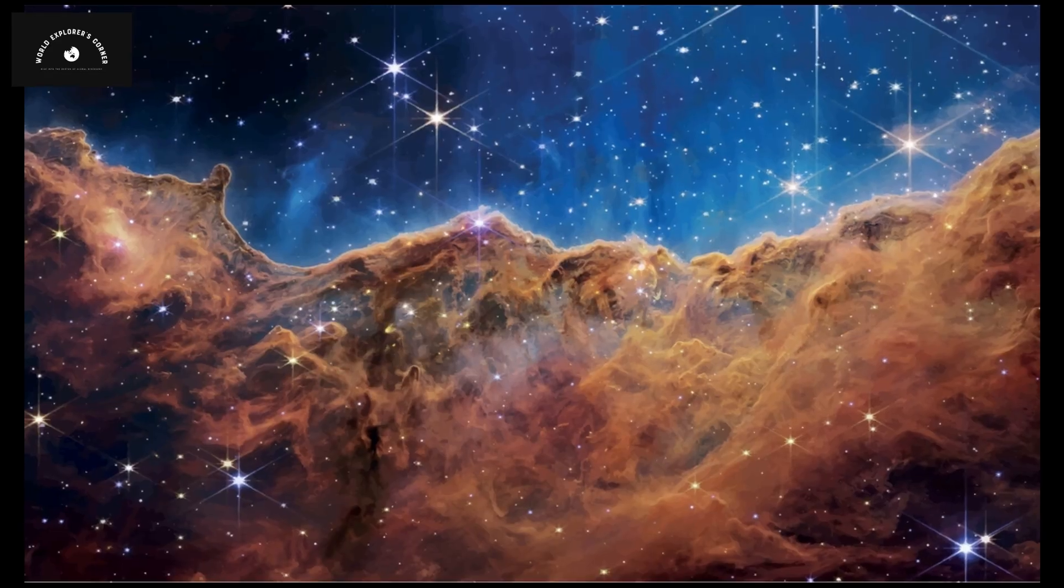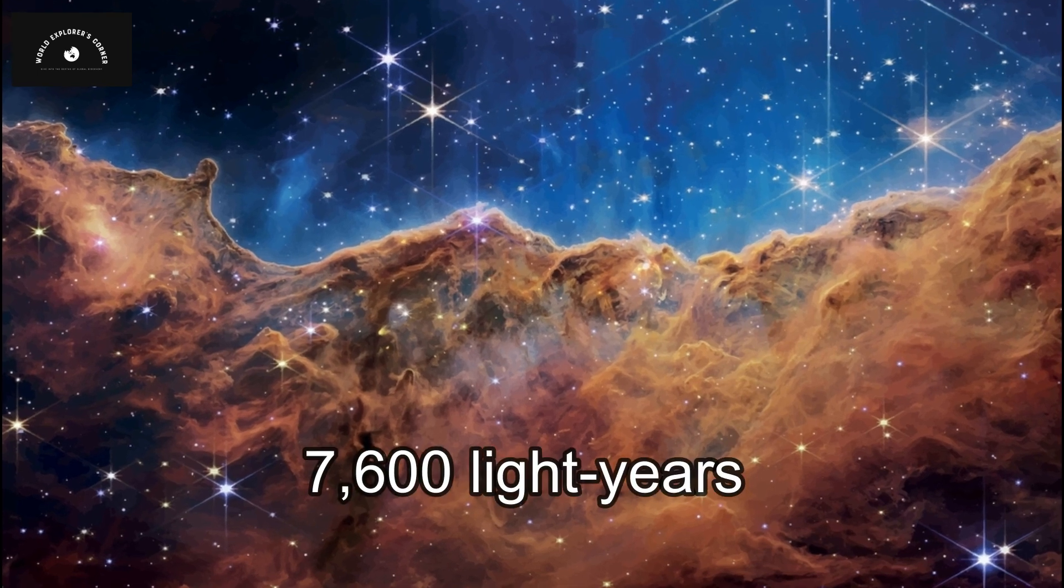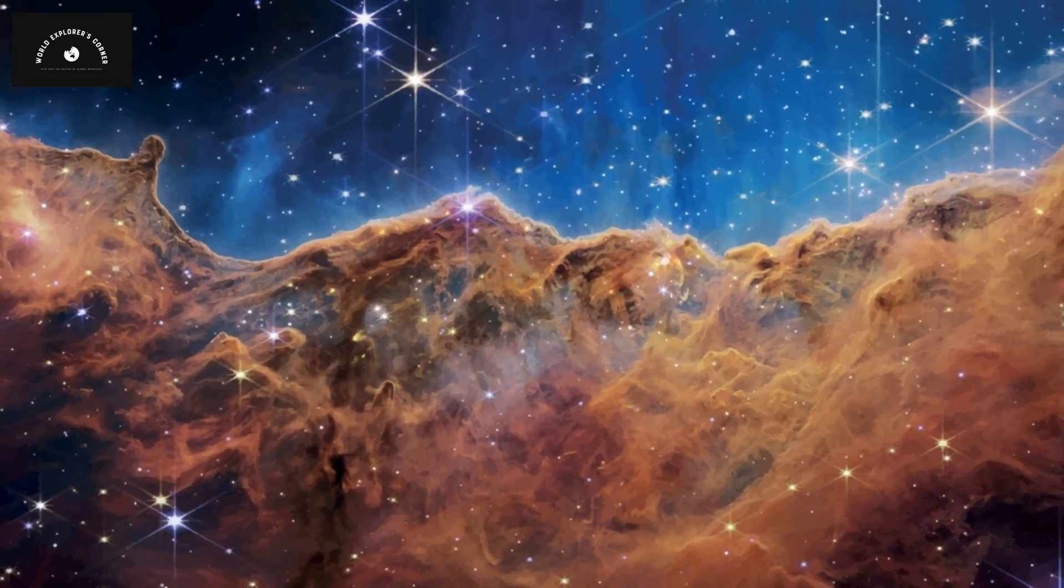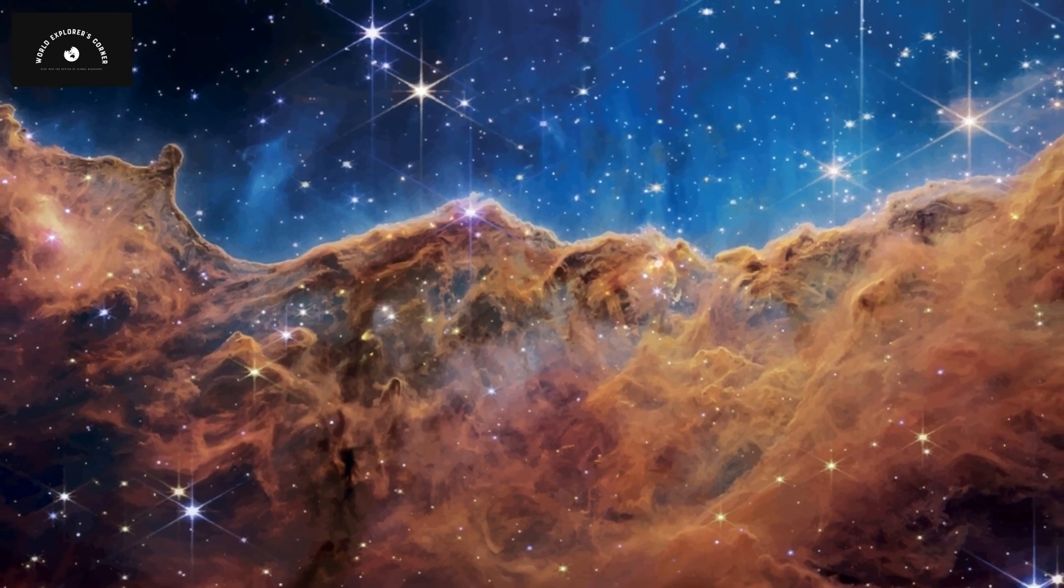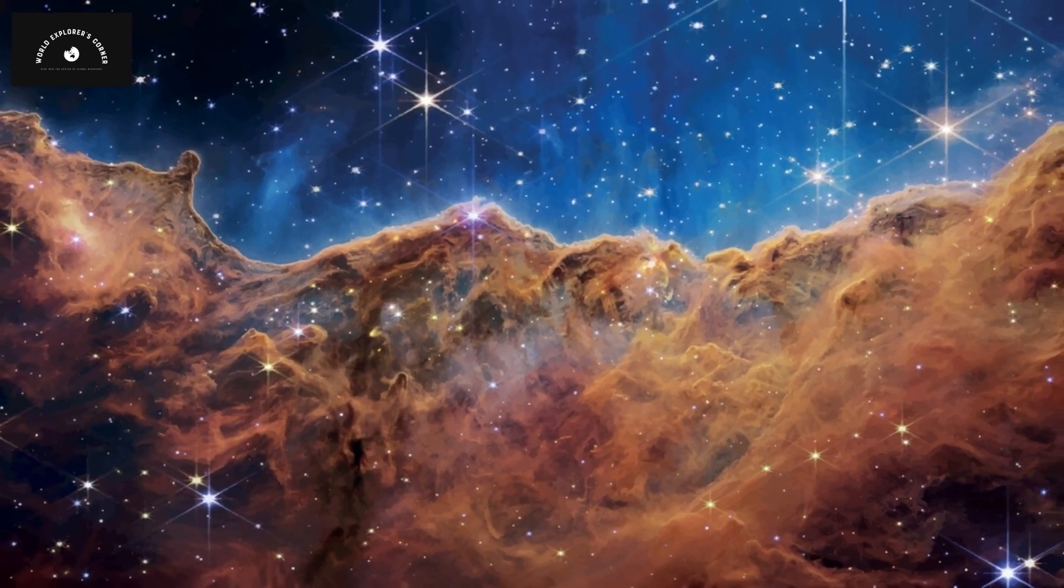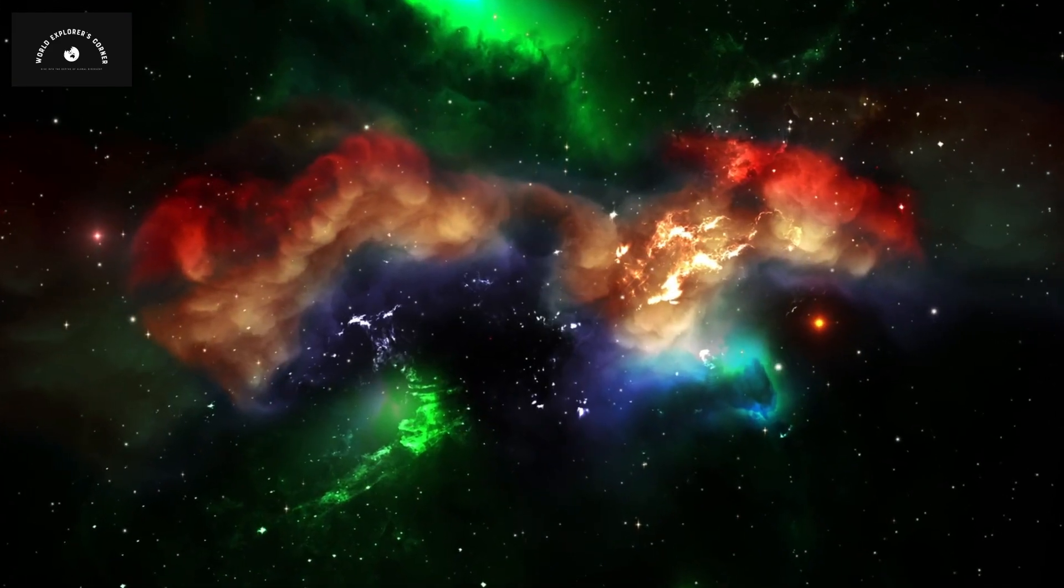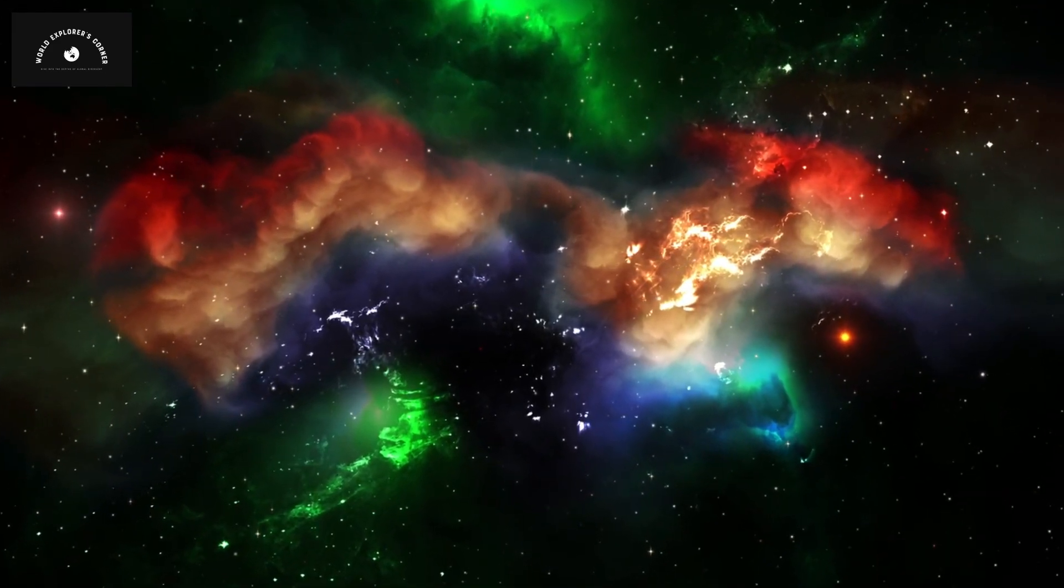The second photo shows a nursery located 7,600 light years away from Earth. In this nursery, known as the Carina Nebula, we can witness the birth of stars that occurred 7,600 years ago. Carina Nebula is just one of the thousands of nurseries within our Milky Way.